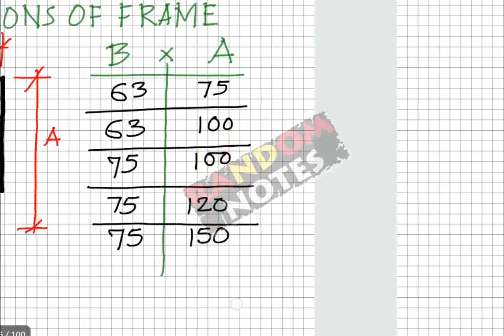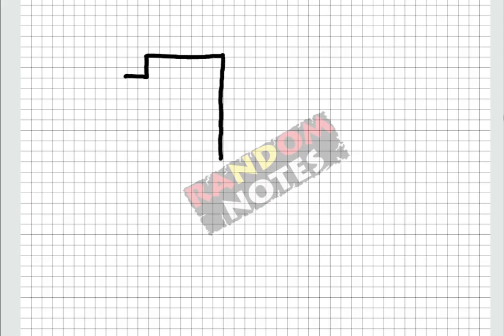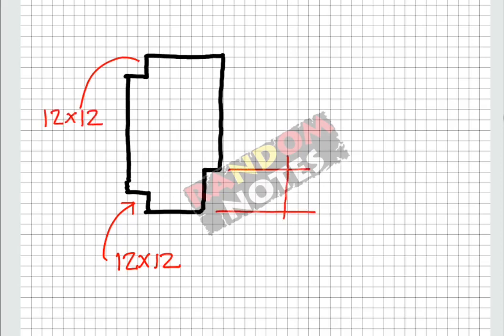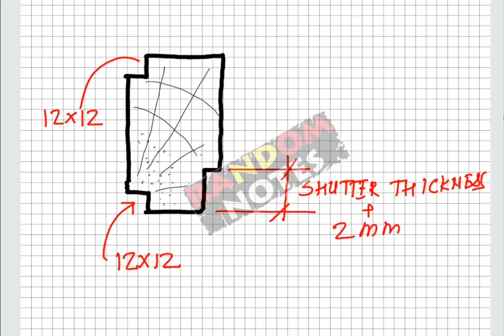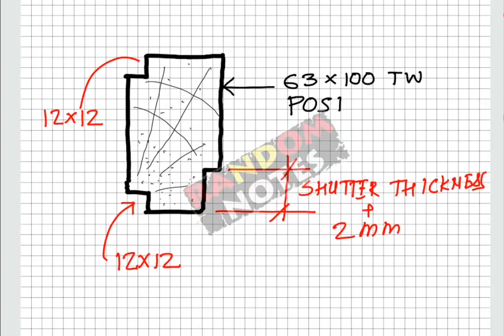Let us give sizes to the rebates made for plaster and the shutter: 12mm by 12mm rebate for the plaster. The width of the rebate for the shutter is slightly more than the thickness of the shutter. The depth of the rebate for shutter is 12 to 15mm.